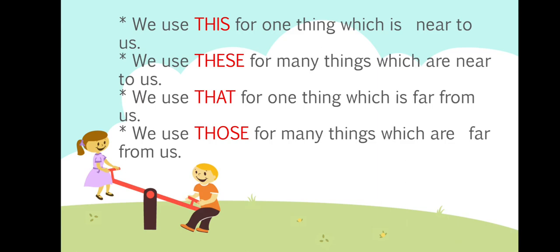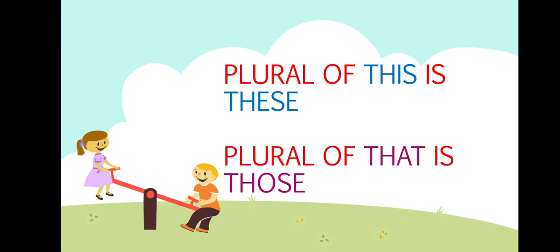So children, today we have learned the concept of this, that, these and those. Let's revise the concept again. We use 'this' for one thing which is near to us. We use 'these' for many things which are near to us. We use 'that' for one thing which is far from us. And we use 'those' for many things which are far from us. The plural of 'this' is 'these', and the plural of 'that' is 'those'.